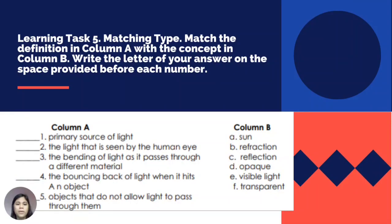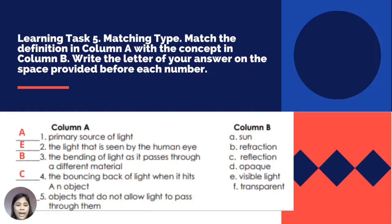For Learning Task 5, matching type: match the definition in Column A with the concept in Column B. Number one: primary source of light. Number two: the light seen by the human eye. Number three: the bending of light as it passes through a different material. Number four: the bouncing back of light when it hits an object. Number five: objects that do not allow light to pass through them. Options: A — sun, B — refraction, C — reflection, D — opaque, E — visible light, F — transparent. Correct answers: one — A, two — E, three — B, four — C, five — D.